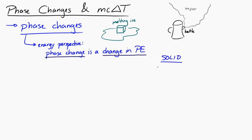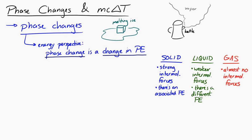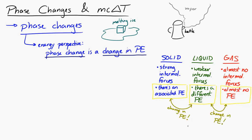In a solid, there are strong forces between the molecules, and those forces are associated with a potential energy. In a liquid, there are less strong forces between the molecules, associated with a different potential energy. And in a gas, there are almost no forces between the molecules, so there's almost no potential energy. Going from a solid to a liquid, or from a liquid to a gas, means changing the potential energy.